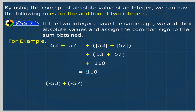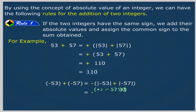Similarly, (−53) + (−57) is equal to minus (|−53| + |−57|) is equal to minus (53 + 57) is equal to −110.